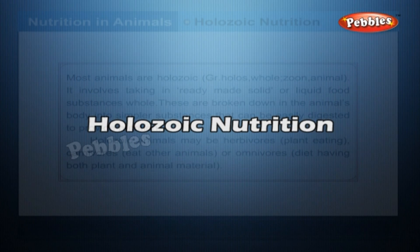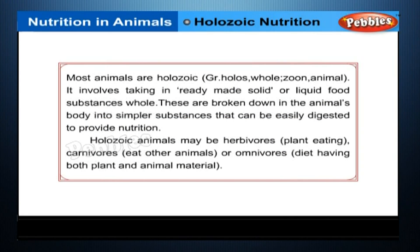Holozoic Nutrition. Most animals are holozoic. It involves taking in ready-made solid or liquid food substances as a whole. These are broken down in the animal's body into simpler substances that can be easily digested to provide nutrition. Holozoic animals may be herbivores (plant-eating), carnivores (eat other animals), or omnivores (diet having both plant and animal material).